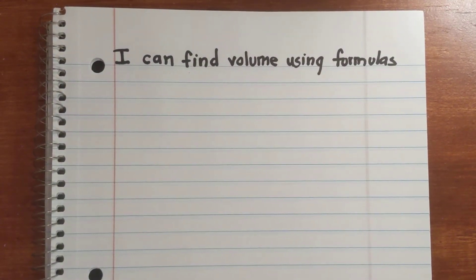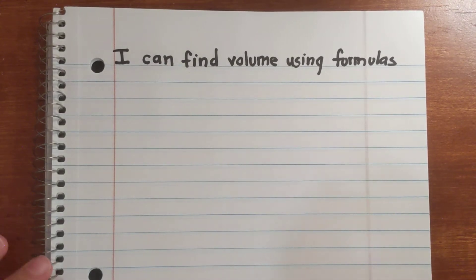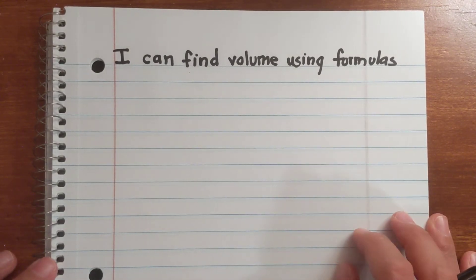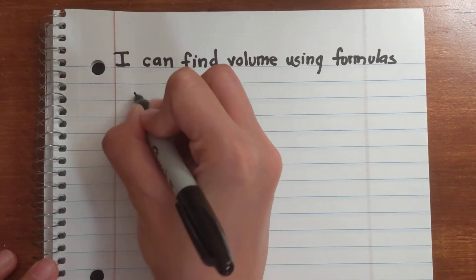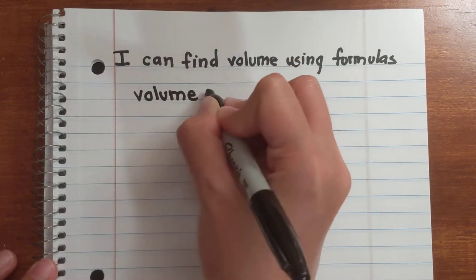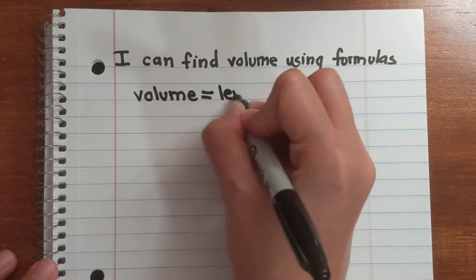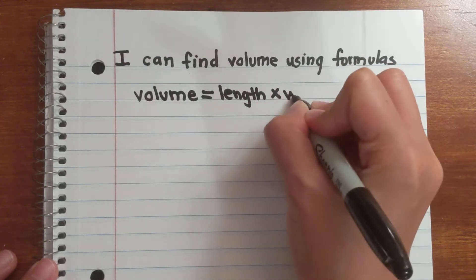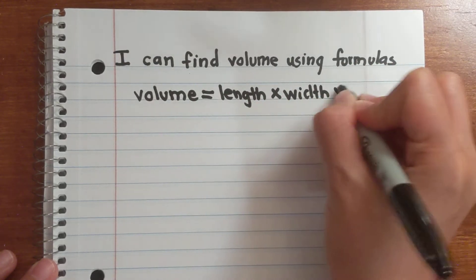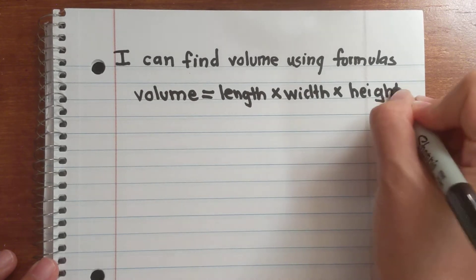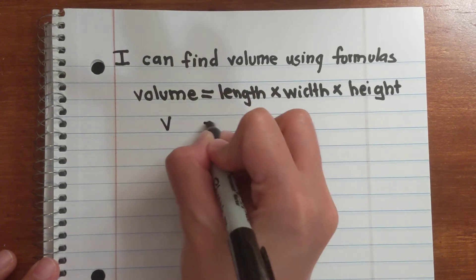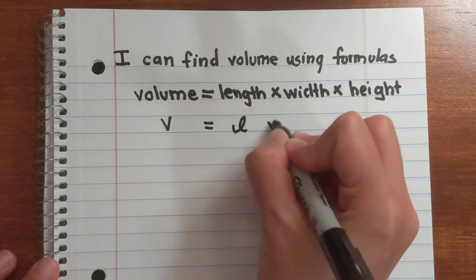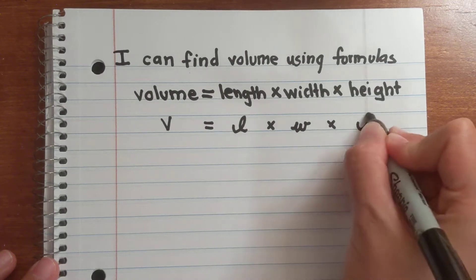Let's go ahead and look at today's lesson: I can find volume using formulas. Let's start off by writing down the formula to find the volume of rectangular prisms. Volume is equal to the length times the width times the height. Typically we don't write out every single word — we just write V is equal to L times W times H.